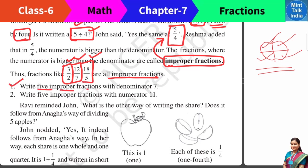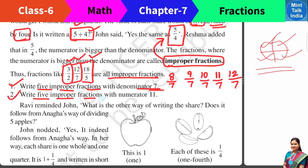Write 5 more improper fractions with denominator 7: 8 by 7, 9 by 7, 10 by 7, 11 by 7, 12 by 7 — and the numerators are all greater numbers. So these are the improper fractions. Number 2: write 5 improper fractions with numerator 11 — 11 by 10, 11 by 9, 11 by 8, 11 by 7, 11 by 6. In all these, numerators are 11 and denominators are smaller numbers. So all these are improper fractions.